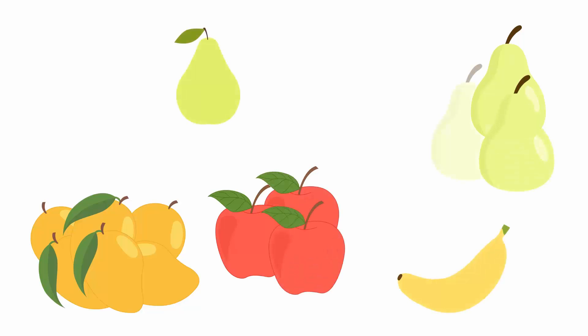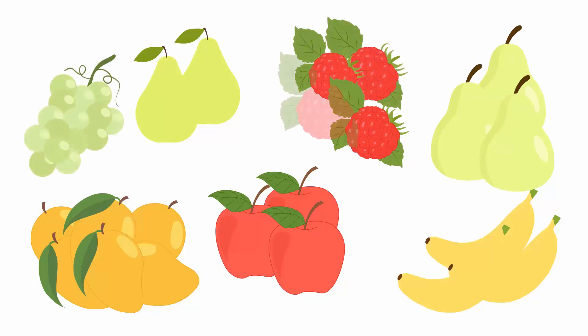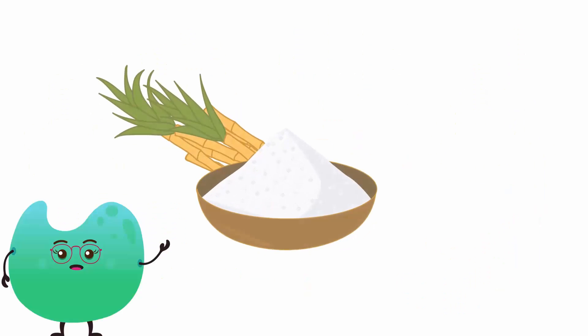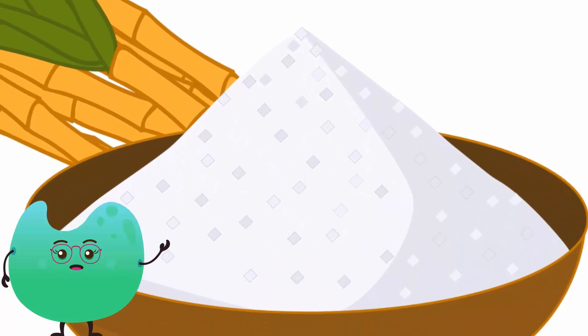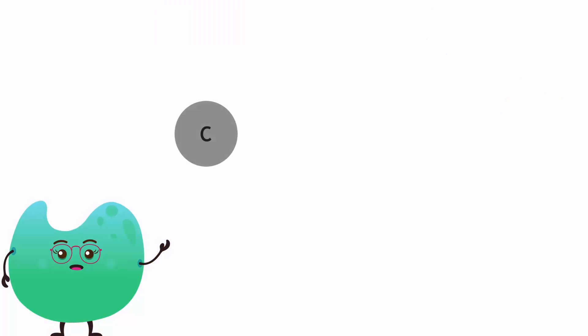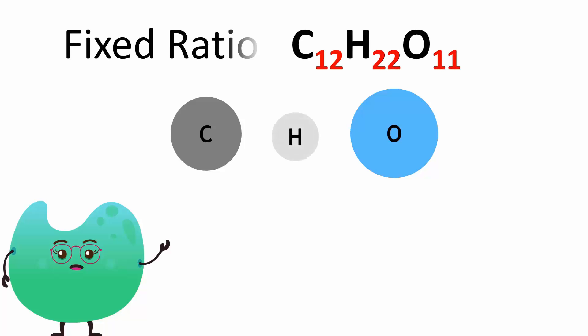Let's compare them. The fruits in a fruit salad can come in any amount or ratio. We can add any fruit according to our taste. Sugar is a compound. It is made up of carbon, oxygen and hydrogen atoms combined in a fixed ratio.